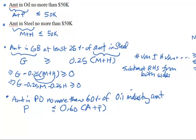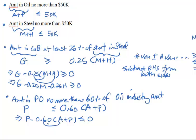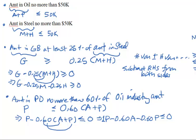This expression also needs to be rewritten in standard format. Subtracting the right-hand side from both sides gives: P − 0.60(A + P) ≤ 0. Expanding the parentheses: P − 0.6A − 0.6P ≤ 0.